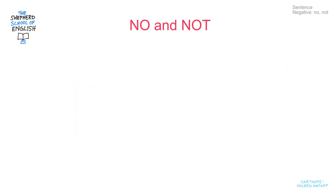First let's look at not. We use not to change verbs from positive — yes — to negative — no. For example: I am, I am not, and so on.